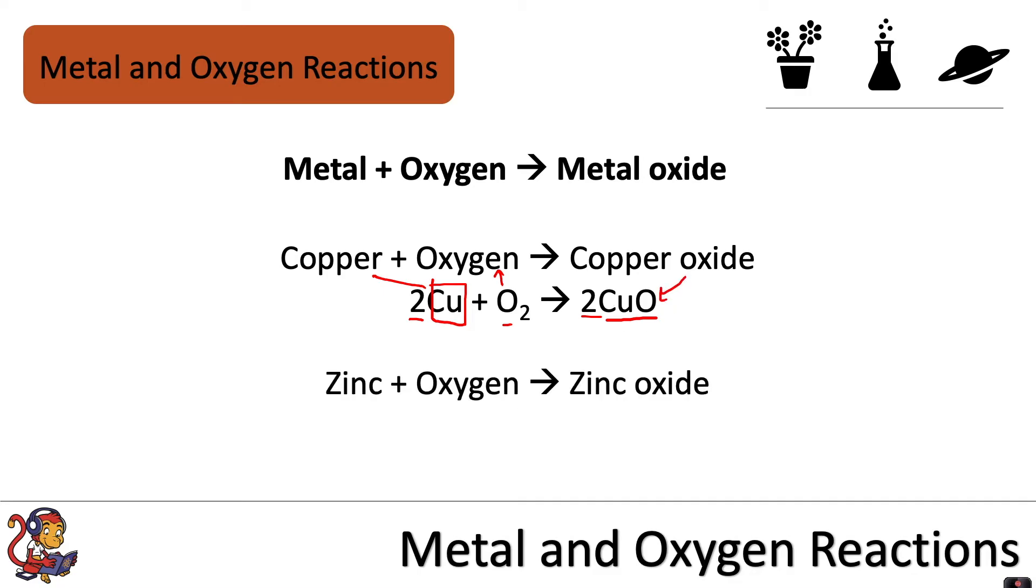Here is another example. When zinc reacts with oxygen it produces zinc oxide, and the symbol equation for this is 2Zn plus O2 makes 2ZnO.